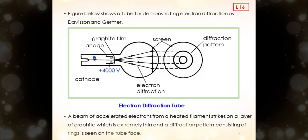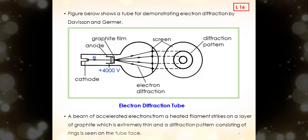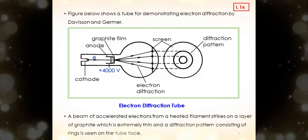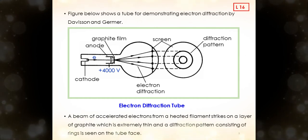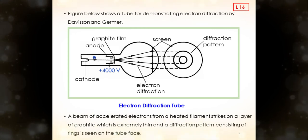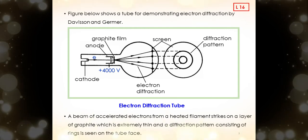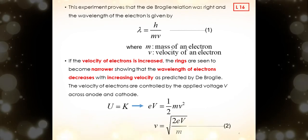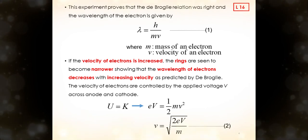The figure below shows a tube for demonstrating electron diffraction by Davisson and Germer. A beam of accelerated electrons from a heated filament strikes on a layer of graphite which is extremely thin, and a diffraction pattern consisting of rings is seen on the tube face. This experiment proves that the de Broglie relation was right, and the wavelength of the electron is given by lambda equals h over m times v.